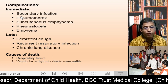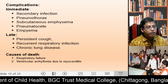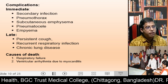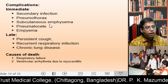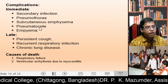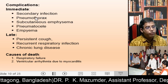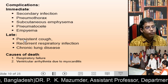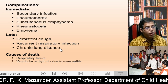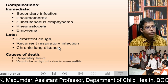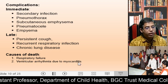Complications of kerosene poisoning: Immediate complications include secondary infection, pneumothorax, subcutaneous emphysema, hemothorax, and empyema — the most important being pneumothorax. Late complications include persistent cough, recurrent respiratory infection, and chronic lung disease. Causes of death are respiratory failure and ventricular arrhythmia due to myocarditis.